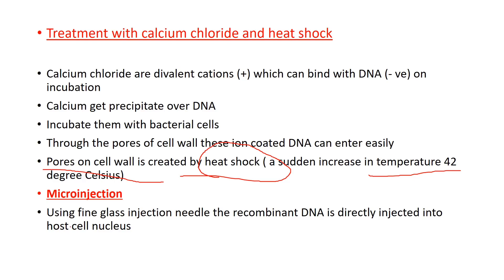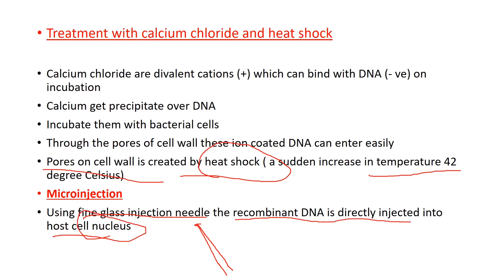Next, we have micro-injection. We need a fine glass needle — it is pointed, thin, and sharp. We put recombinant DNA into this needle and directly inject it into the host cell — into the nucleus. You can inject it directly into the nucleus of the host. This is called micro-injection.